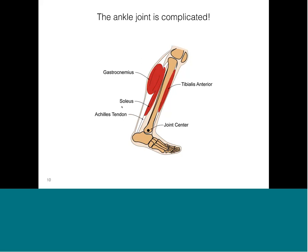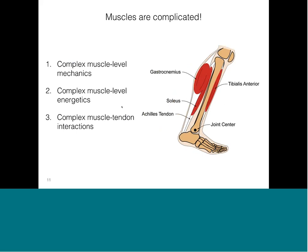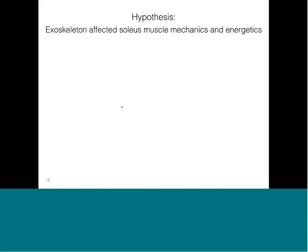Muscles are complex mechanisms. Muscle force production is not just dependent on activation — it is also dependent on the force and length of the muscle. Muscles do not just consume energy to do work; they also consume energy to produce force at constant length. And muscles and tendons exhibit complex interactions during walking that researchers suggest are tuned for optimal efficiency.